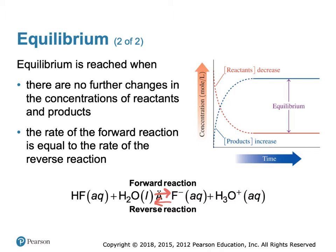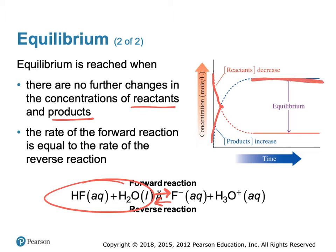Equilibrium is a state when there is no further change in the concentration of the reactants and the products. The rate of the forward reaction is equal to the rate of the reverse reaction. Initially, when we mix these two reactants together, you'll see a decrease in the concentration of the reactants and an increase in the concentration of the products. Equilibrium is the point at which that concentration is no longer changing — the forward and reverse reactions are still occurring, but at the same rate.